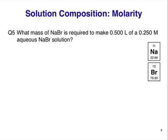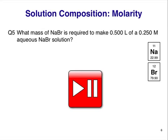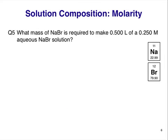How about another example? Question 5: What mass of NaBr, sodium bromide, is required to make 0.500 liters of a 0.250 M aqueous NaBr solution? Pause the video here and write down your answer. This type of problem is commonly encountered in the laboratory — you know what concentration solution you need and what volume of it for your experiment, but not how much solute you should weigh out to make this solution. To help us, we'll come up with a solution map.